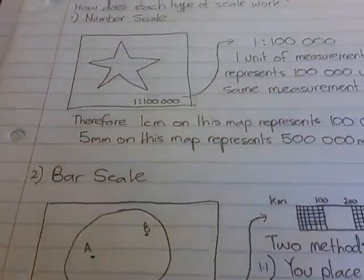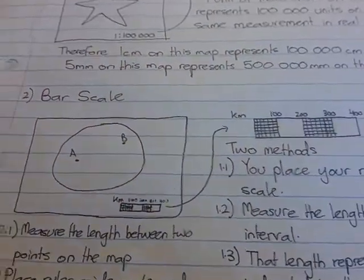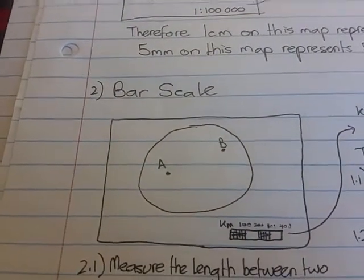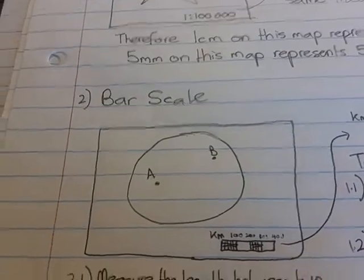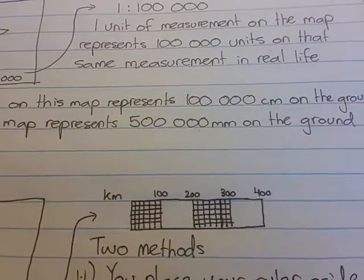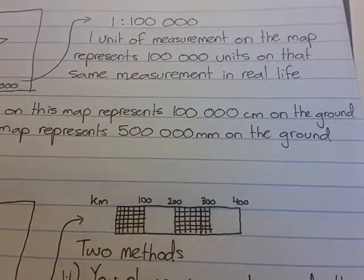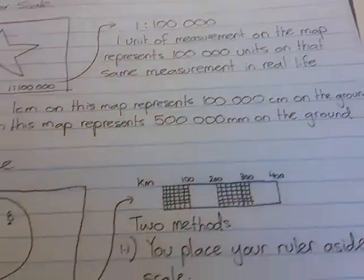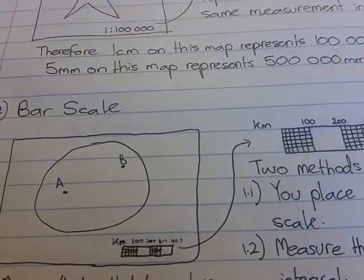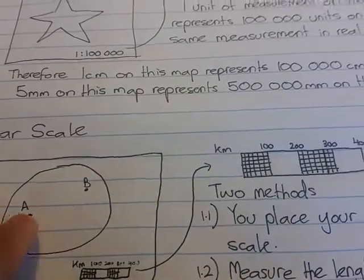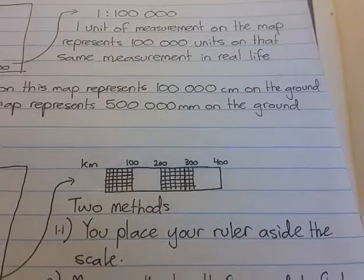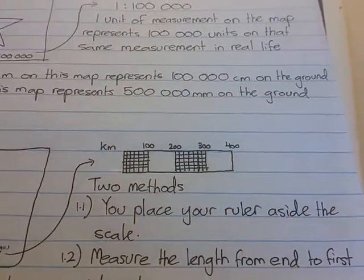A bar scale on the other hand — so this is my map of a circle-looking island with two eyes, A and B, including a close-up of the bar scale that I made. There are two different ways in which a bar scale can be used. Let's say you had to measure the distance between A and B. The first method is going to require your ruler. You place your ruler alongside the scale.